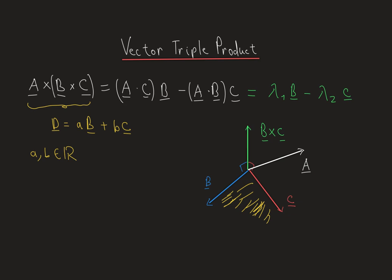This is how you can easily remember the formula for the vector triple product. When you're in an exam and you forget it, remember that the result will always be a linear combination of the vectors in parentheses — the vectors you first cross together. Each of those vectors is multiplied by the dot product of the two remaining vectors. For vector b, the associated dot product uses the two remaining vectors a and c.